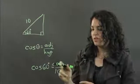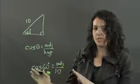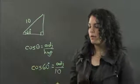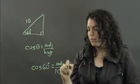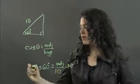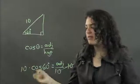So to solve for the adjacent, we multiply both sides by 10. So, 10's cancel out here. 10's, I'm going to rewrite it here.